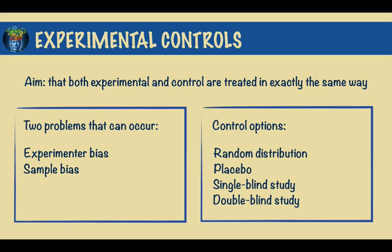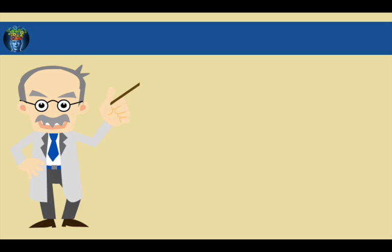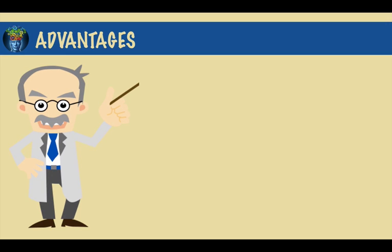Two other options are single-blind and double-blind design. In a single-blind design, subjects do not know if they are assigned to the experimental or control group. In a double-blind situation, the experimenters are also unaware of which participants are in which group.